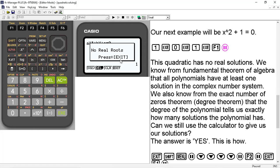So this quadratic has no real solutions, but we know from the fundamental theorem of algebra that all polynomials have at least one solution in the complex number system. We also know from the exact number of zeros theorem, or the degree theorem as it's sometimes called, that the degree of the polynomial tells us exactly how many solutions the polynomial has. So can we still use the calculator to give us our solutions? And the answer is yes, and here's how.